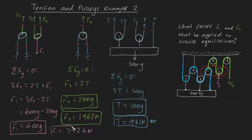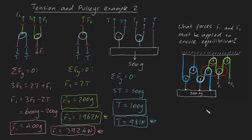In summary, we need to pull down on the green rope with a force of 1962 newtons, and pull down on the pink rope with a force of 3924 newtons. And that is the problem solved. I hope that made sense. Cheers.